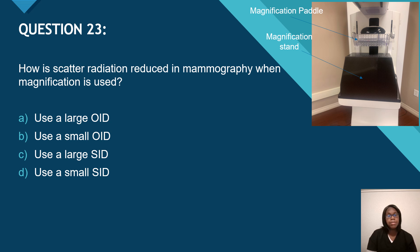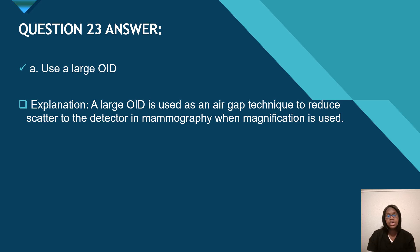Question 23: how is scatter radiation reduced in mammography when magnification is used? Does it use a large OID, a small OID, a large SID, or a small SID? It uses a large OID. A large OID is used as an air gap technique to reduce scatter to the detector in mammography when magnification is used.